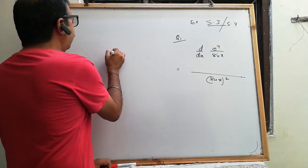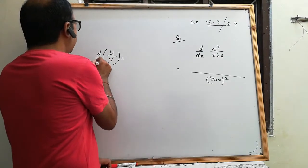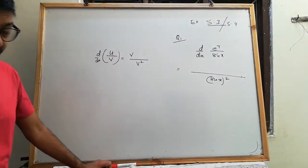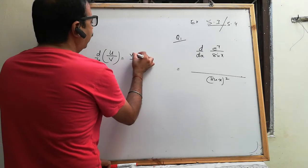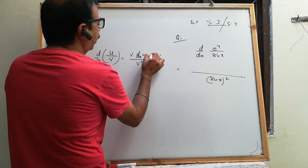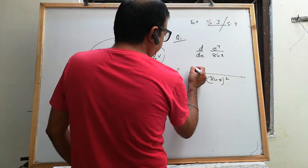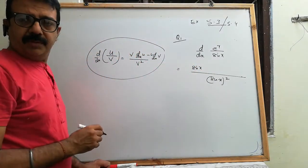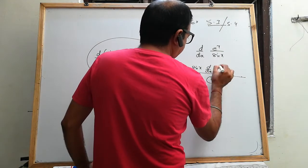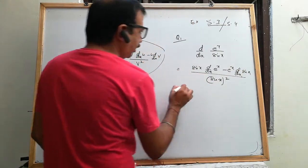It is u upon v form. अगर हमें differentiation लेना है तो नीचे वाले function को square करके नीचे लिखते हैं, फिर नीचे वाले function को एक बार ऊपर लिखते हैं, फिर d/dx of u, फिर u into d/dx of v — this is how we apply it. ऐसे ही याद रखना है, ऐसे ही apply करेंगे।